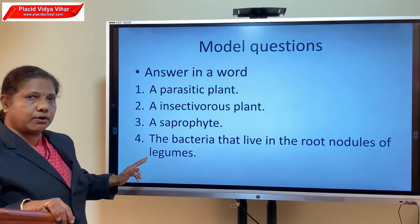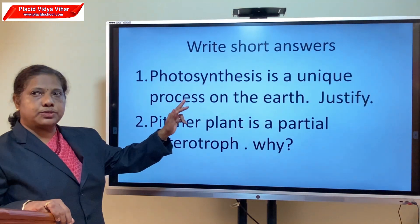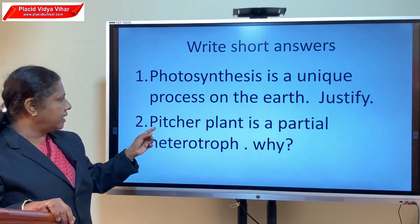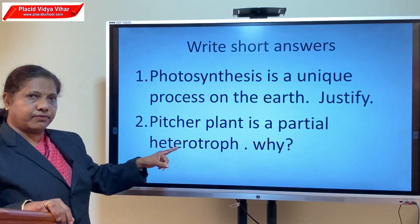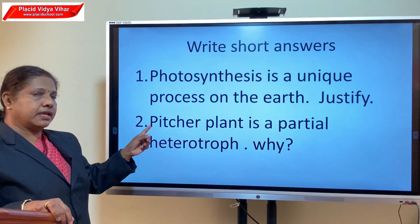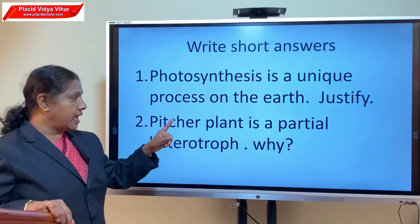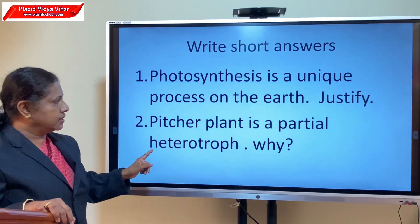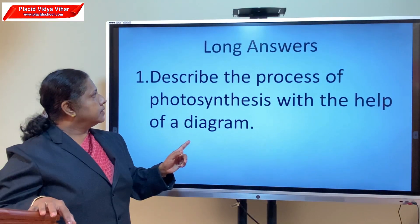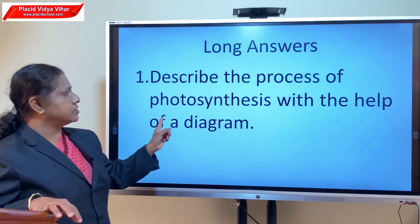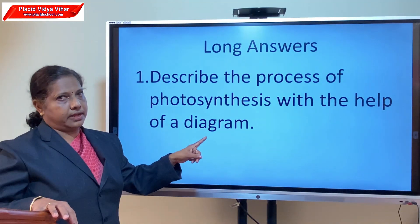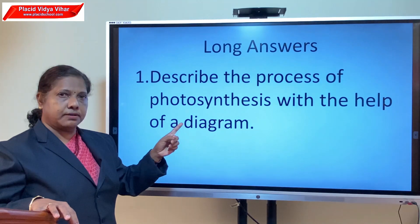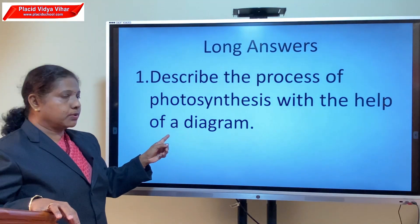For short answers: photosynthesis is a unique process on Earth — already explained. Pitcher plant is a partial heterotroph because it can do photosynthesis but also traps insects as it lives in soil deprived of nitrogen. For long answers, describe the process of photosynthesis with the help of a schematic diagram.